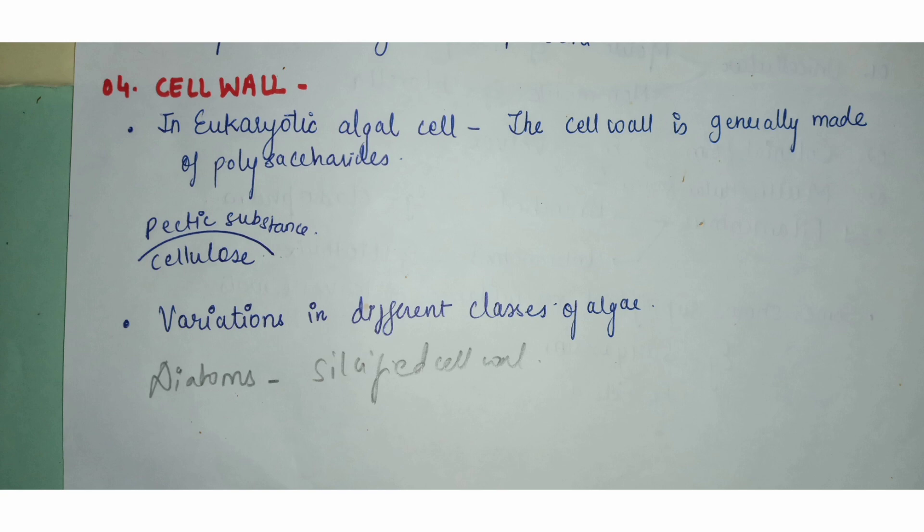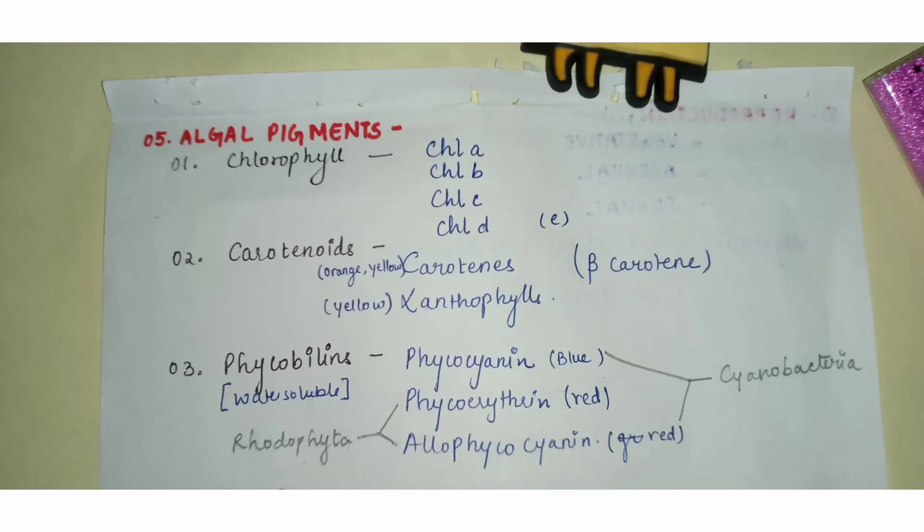Basically the algal cell wall is made up of a polysaccharide, which is cellulose. There are further variations between different classes of algae which will be studied later. The fifth characteristic is algal pigments.